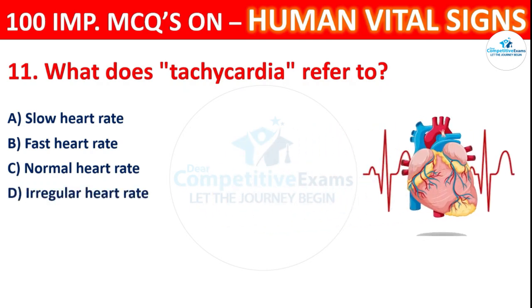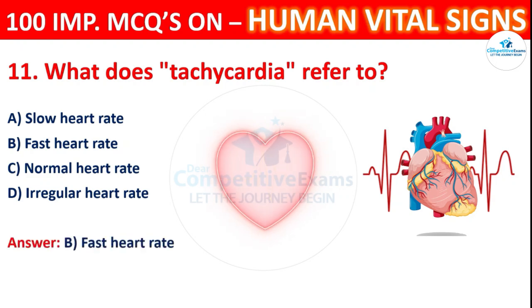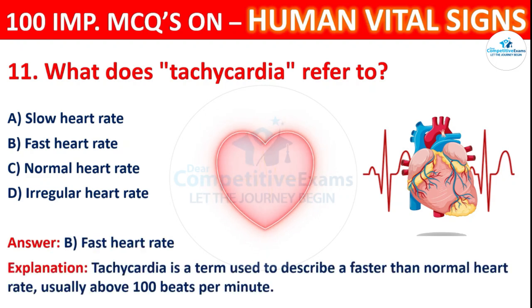Question 11 answer: The correct answer is B, fast heart rate. Tachycardia is a term used to describe a faster than normal heart rate, usually above 100 beats per minute.